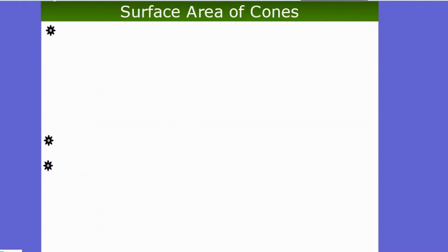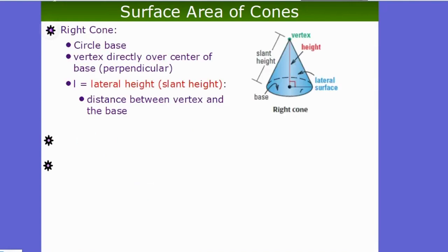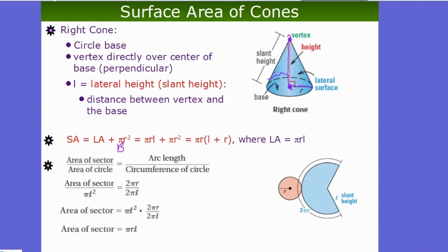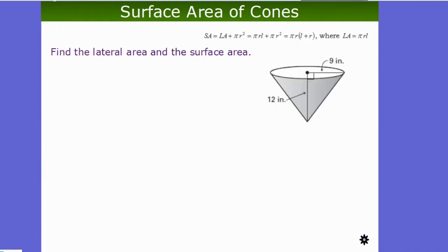Cones are basically curvy pyramids. For a right cone, the vertex is directly above the center of the circular base. The surface area formula is SA = πrl + πr², where l is the slant height, πr² is the base area (uppercase B), and πrl is the lateral area. The derivation involves sectors and arc lengths, but we'll focus on using the formula.